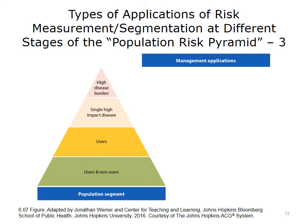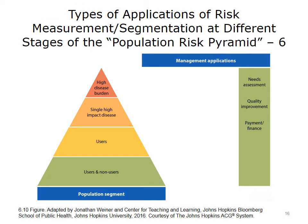The next run-up on the pyramid includes those people who use health care, whether or not they are low-risk or high-risk. The next run-up includes individuals who may have modest levels of risk, such as a single high-impact disease or several lower-impact conditions. And then, at the tip of the pyramid, there are those people with multiple high-impact morbidities, which lead to an overall higher-risk burden. The pyramid presents a way of thinking and arraying the entire population, either in a community or in an integrated delivery system or health maintenance organization, HMO.